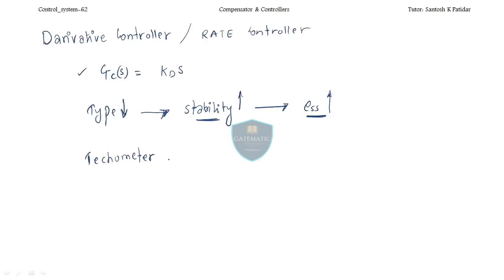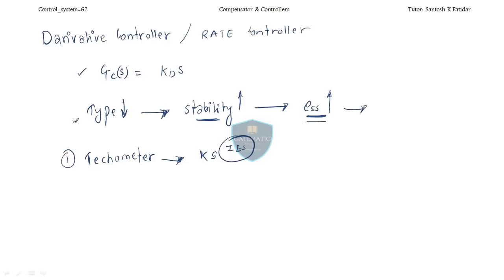The best example of the derivative controller is the tachometer. The transfer function of the tachometer is ks. This point is very important for IES — 4 or 5 times there have been questions based on this. When you add the derivative controller, one zero is added at origin; hence the type decreases, stability increases or improves, but the steady state error also increases.